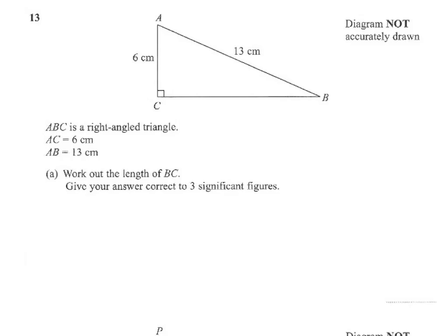So we're working with a right angle triangle. You can see that AC, one of the small sides, is 6, and that the long side is 13. The long side is always opposite the 90 degrees. So we need to find the length BC and give the answer correct to three significant figures.